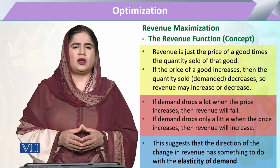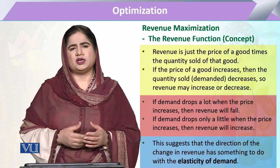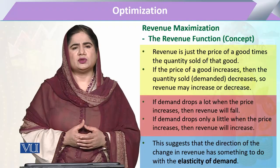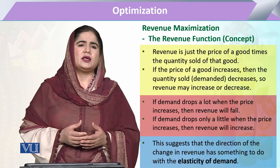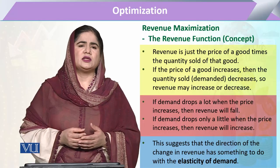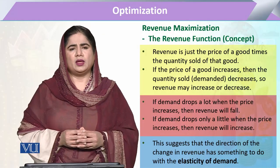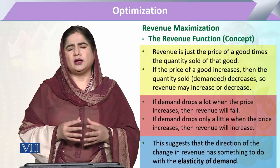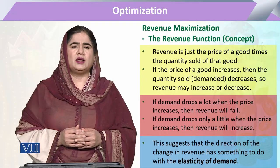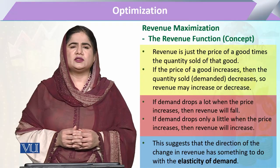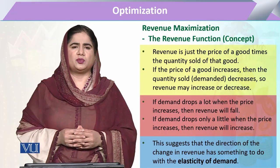So revenue changes when one aspect changes, or there is a possibility that in response to a change in one, both components change. Now here, one possibility is that there is a change in the price of the output.